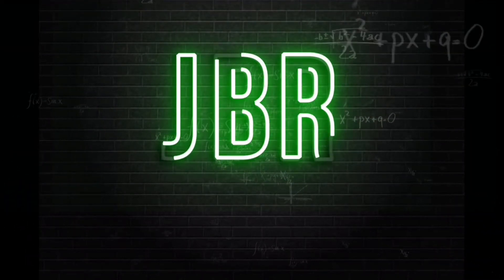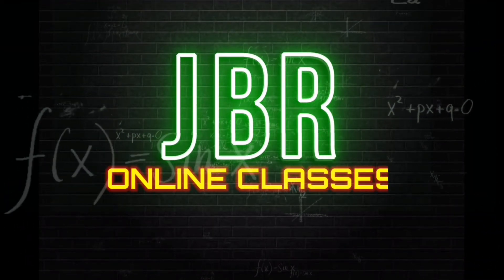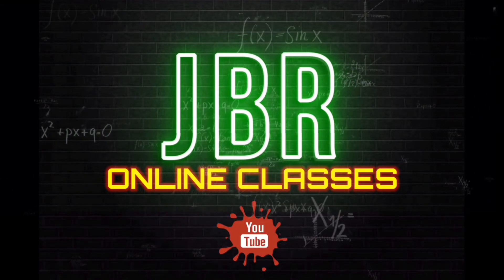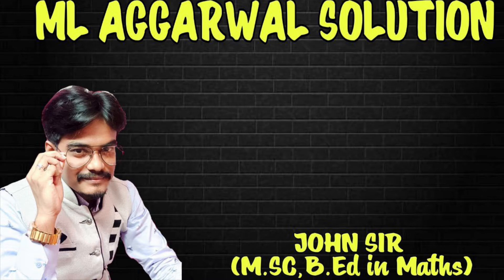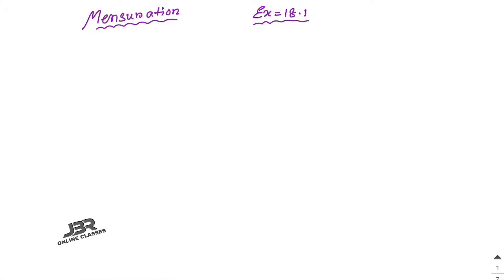Hello guys, welcome and welcome back to my channel JBR Online Classes. Like, share and subscribe my channel. In this video I'm going to start a new chapter, that is chapter number 18: Mensuration. I'm going to discuss about the area and perimeter of some plane figures like triangle, rectangle, square, circle and parallelogram.